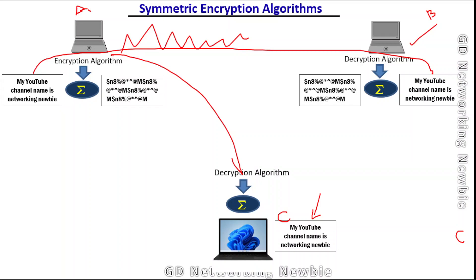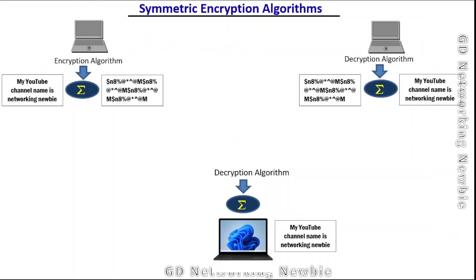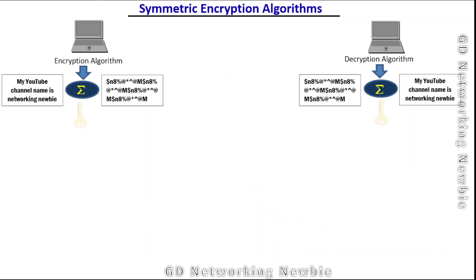To avoid this problem, in symmetric encryption both the sender and receiver use a common secret key — a key which is known to each other and only they know about. They use that particular secret key, which only belongs to user A and user B, and no one else knows about that key. They use that key in addition to the actual encryption algorithm to encrypt the message, and at the destination, user B also uses the same key to decrypt the message.